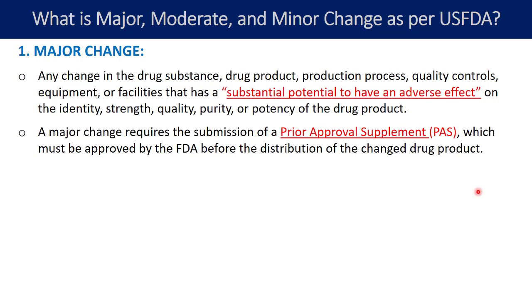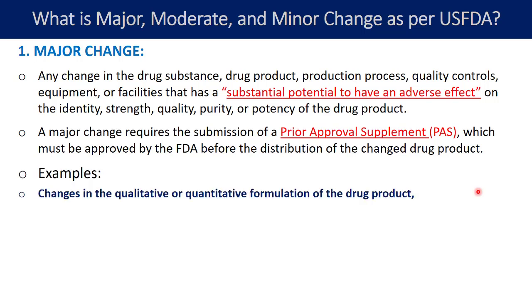The first example of a major change is changes in the qualitative or quantitative formulation of the drug product. Qualitative means if you are either adding or removing any excipient — that is called a qualitative change. Quantitative means you are only changing the quantity of the excipient present in the drug product without adding or deleting any excipient. Both qualitative and quantitative changes are classified as major changes, and you must obtain prior approval before distributing the changed product in the US market.